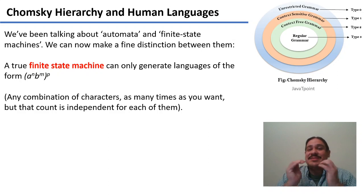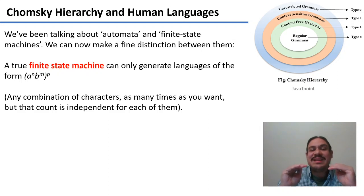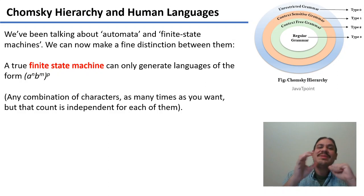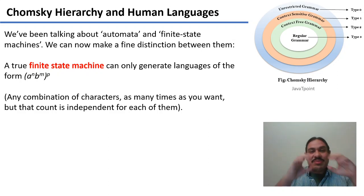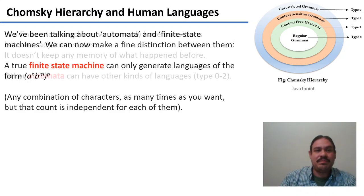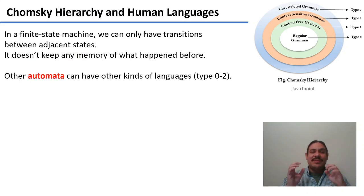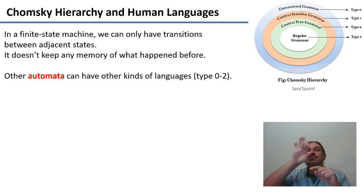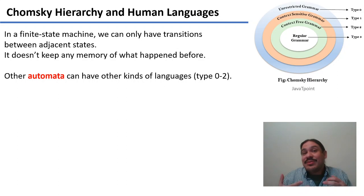So we can finally make the definition very precise. Finite state machines are a kind of automaton — one that generates regular languages, for example in the form A^N B^M P. You can generate an arbitrary number of symbols an arbitrary number of times, but they're not going to be communicating with one another. We can only have transitions between states, so you cannot have communications across distant states in finite state machines. You can have them in other types of grammars, but this is going to cost us computationally.